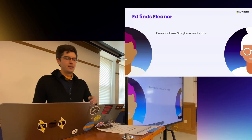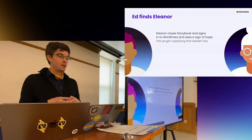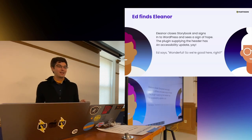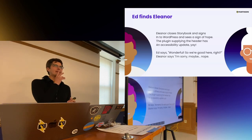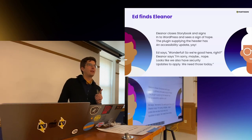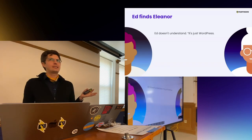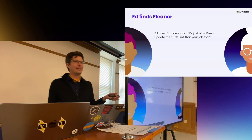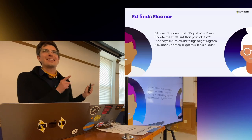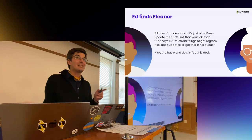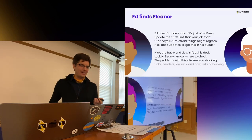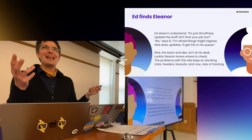Eleanor closes Storybook and signs into WordPress and sees a sign of hope — the plugin supplying the header has an accessibility update. Ed says, 'Wonderful, so we're good here, right?' Eleanor says, 'I'm sorry. Maybe. Nope. Looks like we also have security updates to apply. We need those today.' Ed doesn't understand: 'It's just WordPress — update the stuff. Isn't that your job too?' 'No,' says Eleanor. 'I'm afraid things might regress. Nick does updates. I'll get this in his queue.' Nick, the backend dev, isn't at his desk. The problems with this site keep on stacking — links, headers, lawsuits, and now risks of hacking.